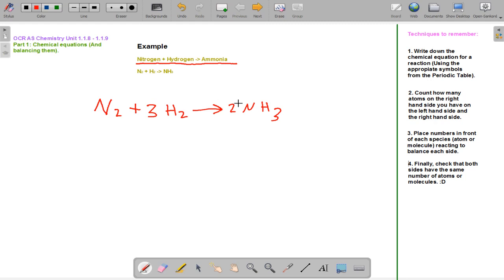2 nitrogen atoms, yep. The objective of the game is to balance the same number of atoms on both sides of the arrow.